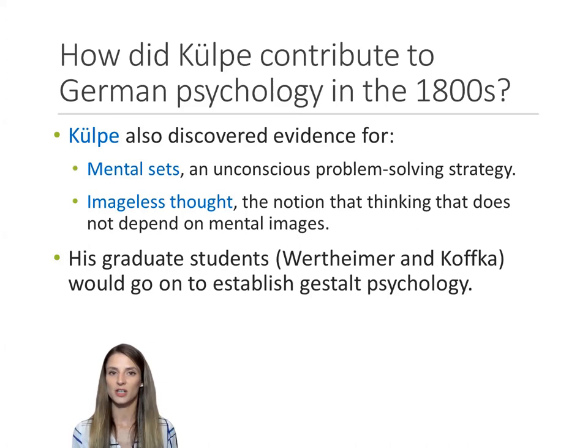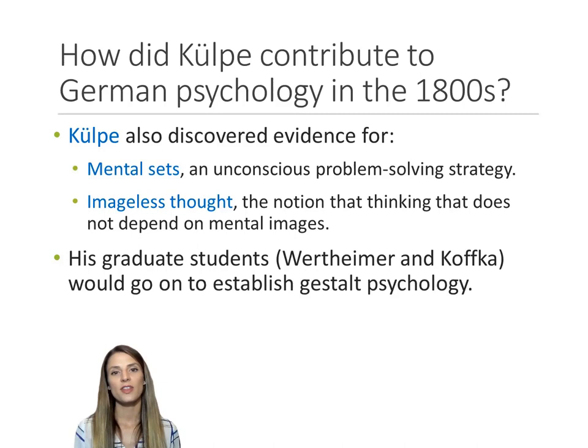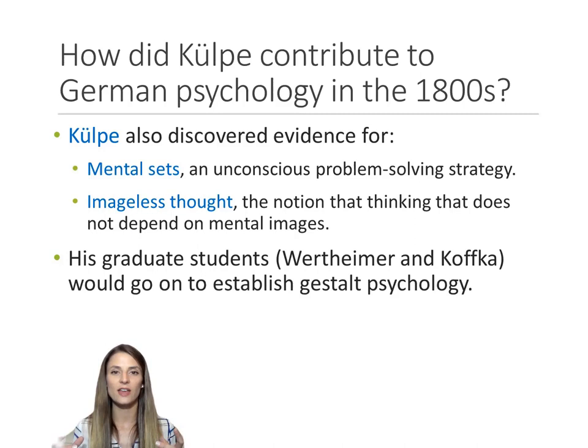Kolpe also made two other discoveries worth mentioning. He found that people tend to use the same set of problem-solving strategies across tasks — he called this a mental set, a person's typical way of solving a problem. He also found evidence for imageless thought: the notion that ideas are not always based on images, and that sometimes we can think about things without having a mental representation of them in our minds.